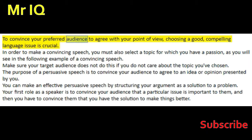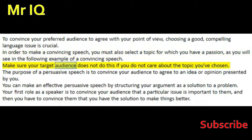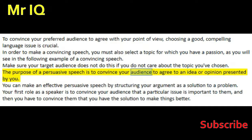To convince your preferred audience to agree with your point of view, choosing a good, compelling language issue is crucial. In order to make a convincing speech, you must also select a topic for which you have a passion, as you will see in the following example of a convincing speech. Make sure your target audience does not disengage if you do not care about the topic you've chosen. The purpose of a persuasive speech is to convince your audience to agree to an idea or opinion presented by you.